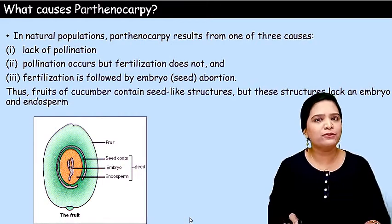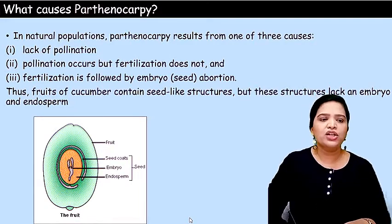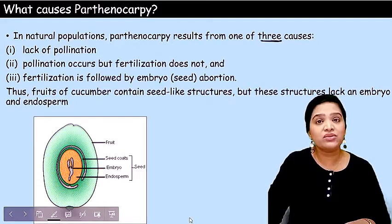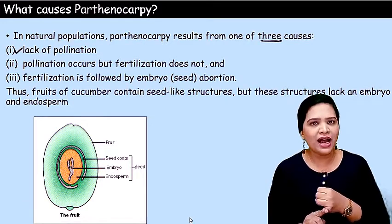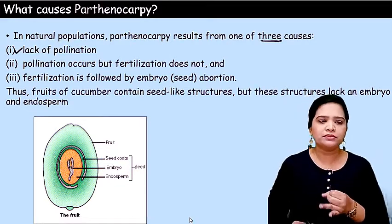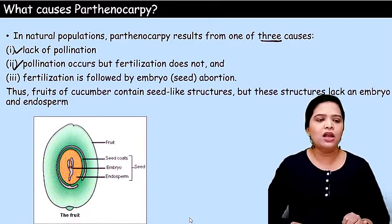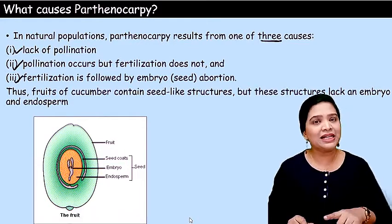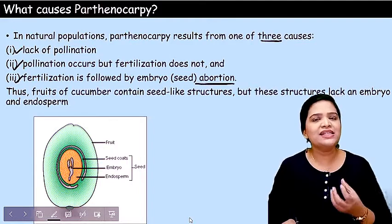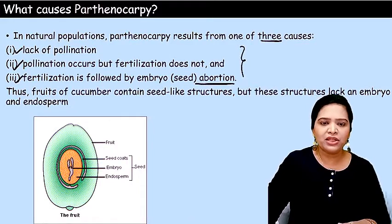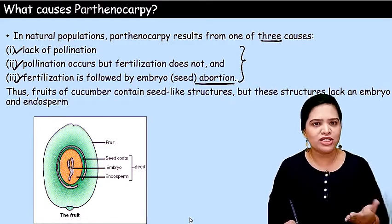What causes parthenocarpy? Why do some fruits not have seeds? Naturally it could be due to three reasons. In a natural population, parthenocarpy results from one of these three causes: either there is no pollination, or pollination occurs but fertilization does not occur, or both pollination and fertilization are completed but the embryo is aborted after formation. So the reason for parthenocarpy could be lack of pollination, lack of fertilization, or embryo abortion.